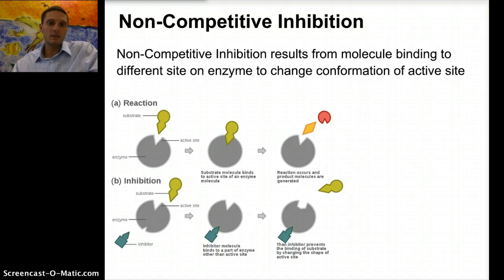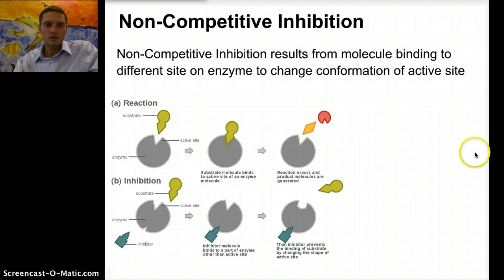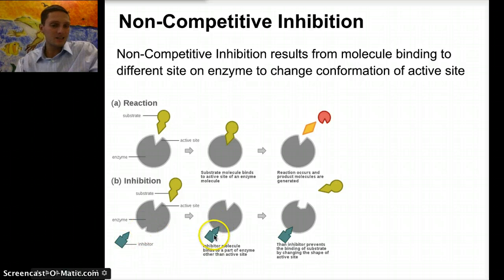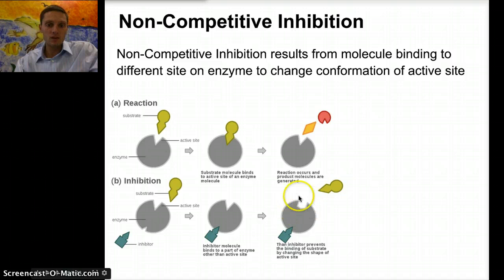Another example is noncompetitive inhibition. In this example, it results from a molecule binding to a different site on the enzyme to change its conformation. In our normal reaction the substrate binds with the enzyme. But with noncompetitive inhibition, the inhibitor binds to a specific site on the enzyme that is not the active site — a different location. What that does is it changes the shape of the active site, so the substrate comes along and is not able to bind with the enzyme because the inhibitor has changed the shape.